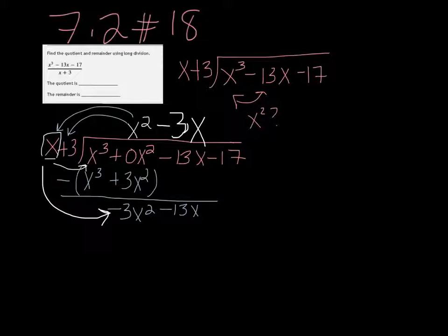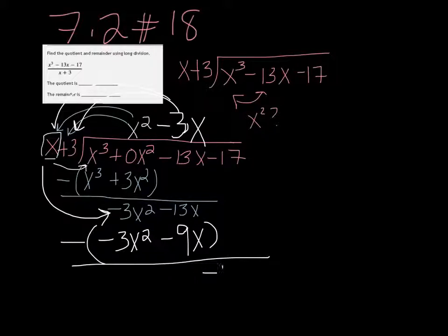So now we're going to multiply minus 3x times both of these terms. So negative 3x times x is negative 3x squared. And negative 3x times 3 is minus 9x. Subtract all of that. I'm going to bring down my minus 17.